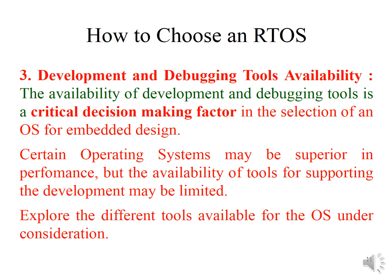The third non-functional requirement is development and debugging tools availability, which is a critical decision-making factor. There are certain operating systems that are superior in performance but lack tools for supporting development and debugging. So choose an operating system for which development and debugging tools are available.